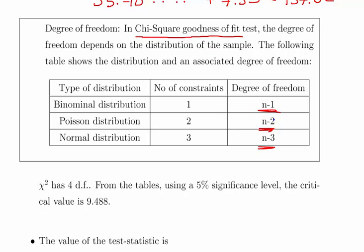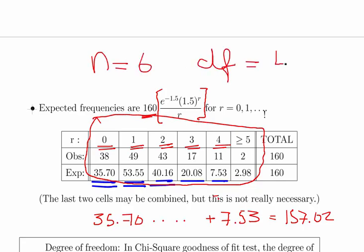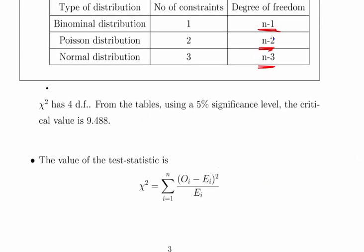In this particular instance, what is n? n is the number of categories we're dealing with. We're dealing with six categories, so n equals 6, which means the degrees of freedom equals 4. The chi-squared critical value, assuming 5% significance level, is 9.488 from the chi-squared critical value tables.